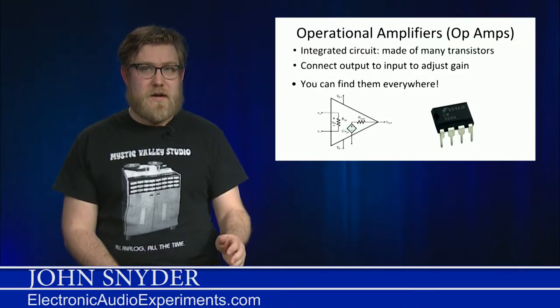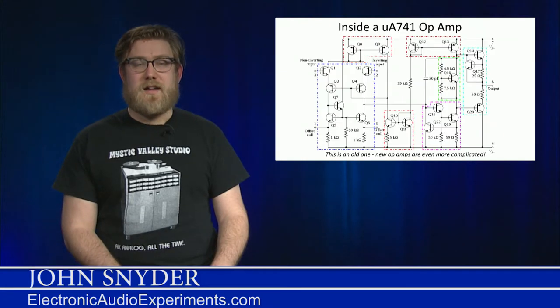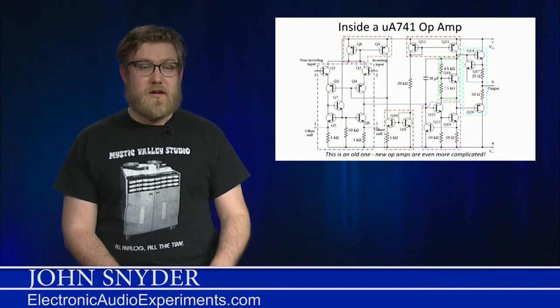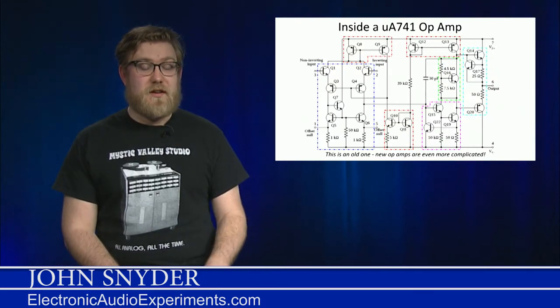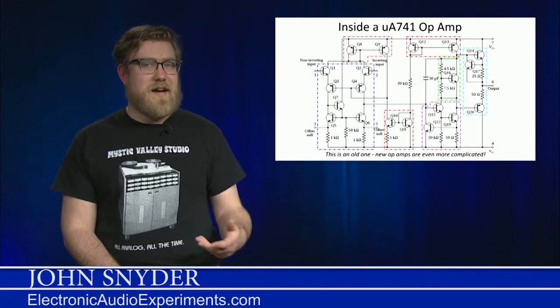And you can find these anywhere. They're in guitar pedals, mixing consoles, guitar amps. You can even find them in the sound card of your computer. As you can see, a classic op amp, this is the UA741, which is a very old design, already has a couple dozen transistors in it. There's a lot going on here, but the things you can do with op amps are in fact quite simple.